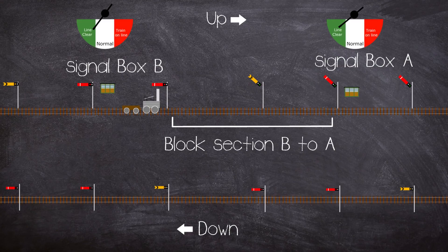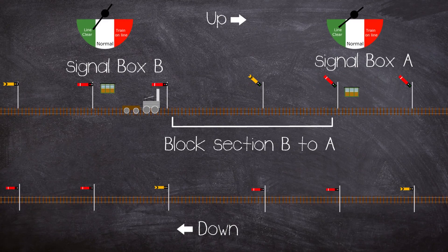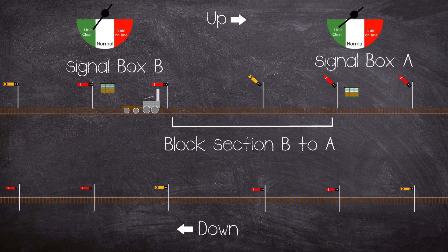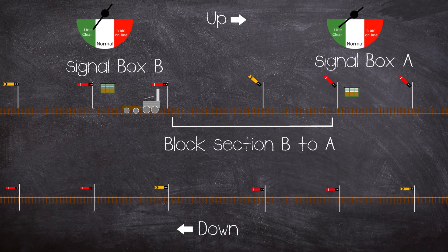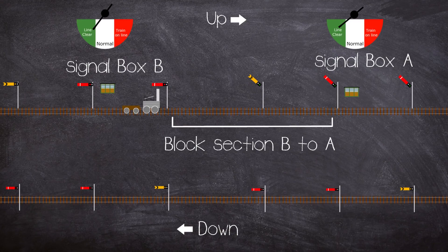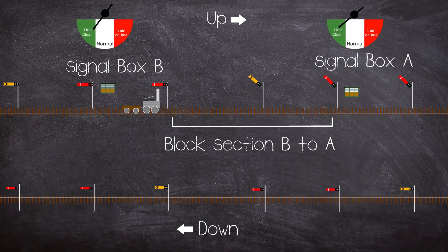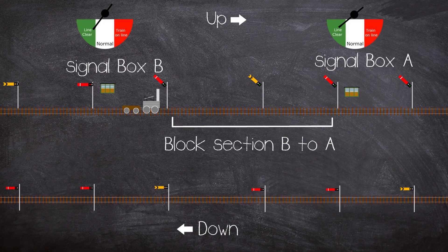In reality the process is much more complicated using various bell codes and indications that the line is normal, that there is a train on the line, or clear. But for this video I'll try not to get too carried away. Okay, so if box A's block is clear, they will then accept a train from box B by indicating line clear, and then box B will clear its starting signal, allowing the train into the block section in our case on the up. Once the train has fully passed the starting signal, the starter will be replaced to danger.